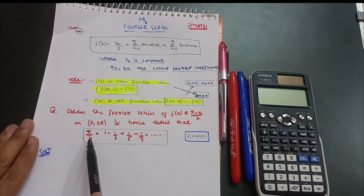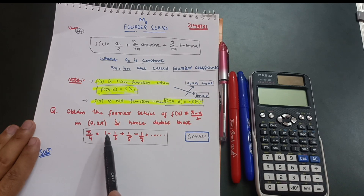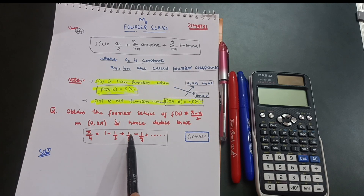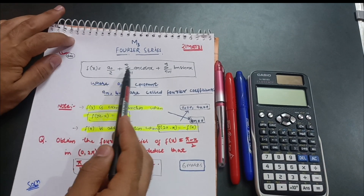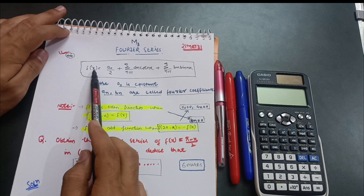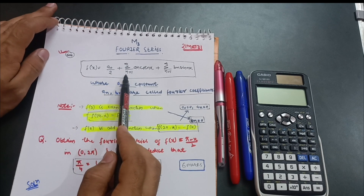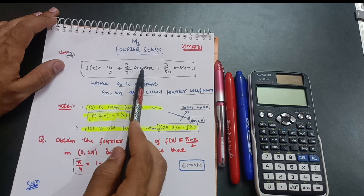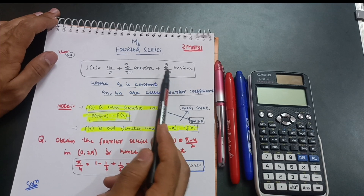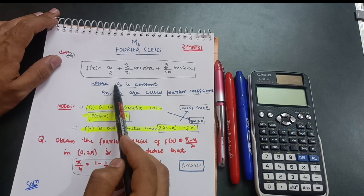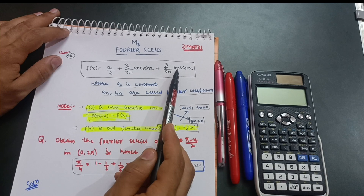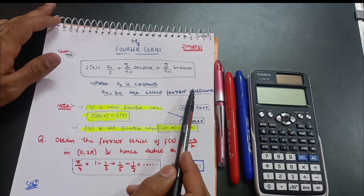We also have to deduce the equation: π/4 = 1 - 1/3 + 1/5 - 1/7 + ... and so on. This is the most frequently asked question in the VTU examination. First, remember the main Fourier series expansion: f(x) = a₀/2 + Σ aₙ cos(nx) + Σ bₙ sin(nx), where a₀ is a constant and aₙ, bₙ are called the Fourier coefficients.